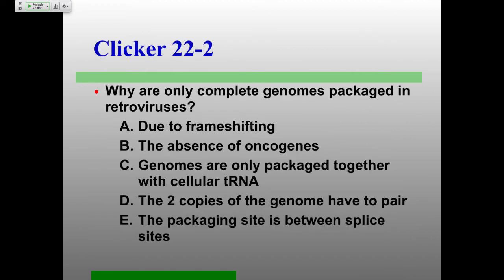Why are only complete genomes packaged in retroviruses? Due to frame shifting, the absence of oncogenes, genomes are only packaged together with cellular tRNA, two copies of the genome have to pair, or the packaging site is between splice sites. The packaging site is between splice sites — so spliced RNA lacks the psi sequence and won't be packaged. 100% correct answer.